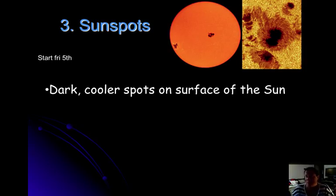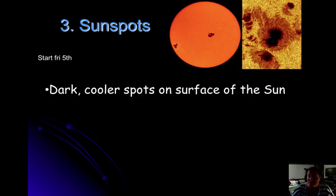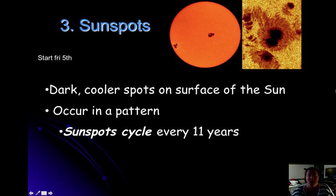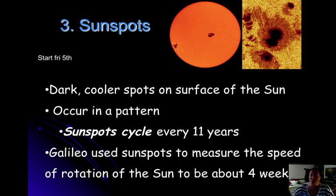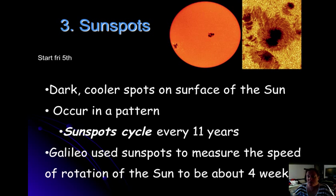Sunspots are dark spots that appear on the sun — they're actually cooler spots on the surface. We use these to study the sun, and they have some effects on our climate as well. They occur in a pattern and cycle about every 11 years, so we have cycles of lots of sunspots and then less sunspots. Galileo used sunspots to measure the speed of rotation of the sun to be about 4 weeks. The reference table on page 15 confirms the sun rotates about every 28 days, so if you watch the sunspots, you'll see them come back around about 4 weeks later.